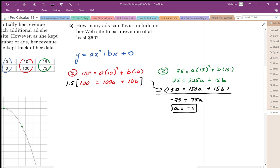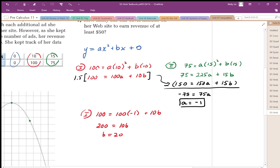This is a system, so I still need to solve for B, and I can plug into either one of these equations to solve for B. I'm going to plug it into equation 1. So I end up with 100 is equal to 100 times negative 1 plus 10B. So this is negative. I'm going to add 100 to both sides, so I get 200 equals 10B. B is equal to 20.